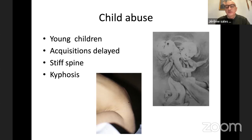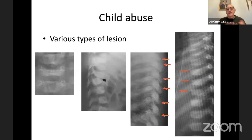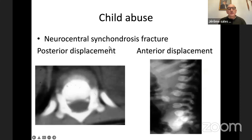Finally, child abuse can very often cause spinal injuries. It occurs in young children, and you can have delayed presentation with a stiff spine and kyphosis. You can see various types of lesions: compression fractures, subluxations, multiple lesions at multiple thoracic or lumbar levels, neurocentral synchondrosis fractures with posterior or anterior displacement. It is unfortunately not such a rare condition.